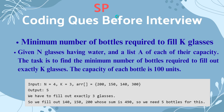SP role students face this question before their interview coding assessment: minimum number of bottles required to fill K glasses. This question is available on HackerRank. Given N glasses of water with a list A of each of their capacities, the task is to find the minimum number of bottles required to fill exactly K glasses. The capacity of each bottle is 100 units. For example, N equals 4, K equals 3.